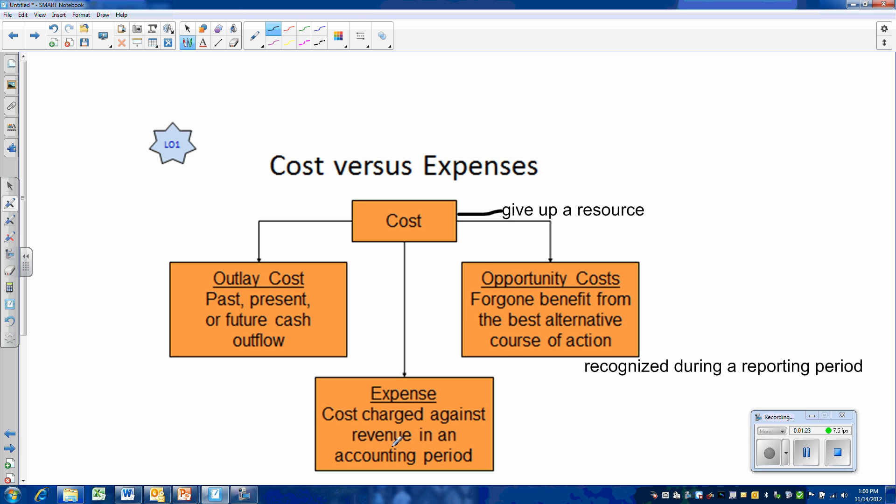And expense, on the other hand, relates to an accounting period. Remember, expenses are matched to revenue within a period. If we do that, that is typically a product cost. If we can't match it to a particular unit of sale, we could have a period cost. Or we can recognize expense based on allocation, like depreciation or amortization.